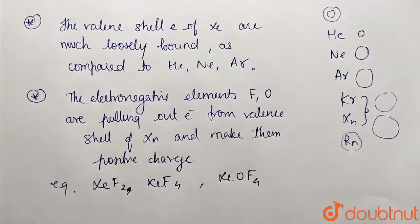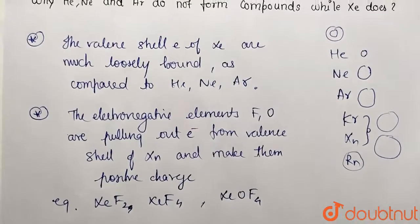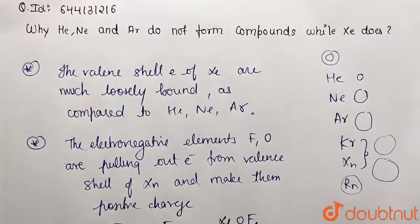The reason is very simple. Here, electrons are loosely packed. That's why they are forming compounds, while helium and neon are not forming.